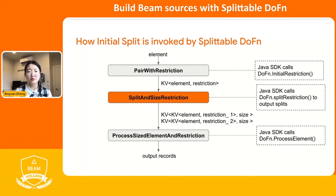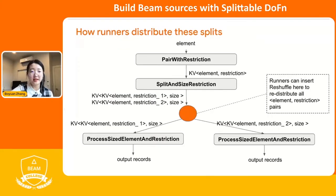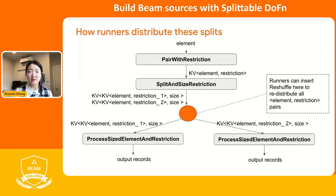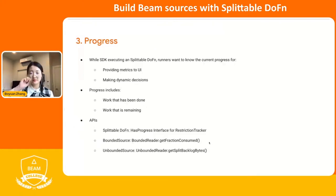After we split the restriction, the runner redistributes these shards on different workers. The runner will insert a reshuffle between the size and split restriction and the next process steps. The reshuffle will help us redistribute these shards evenly on the workers. Then we will go to the execution step, which is really reading from the source and outputting records. During the actual reading steps, we always want to provide progress information back to the runners.